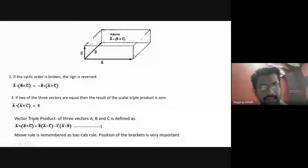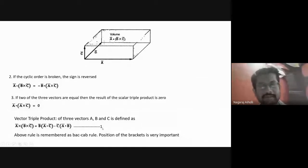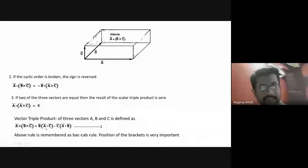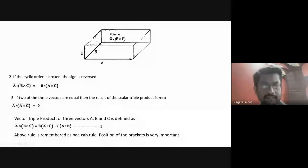Let us move on to the vector triple product. The vector triple product of three vectors a, b, and c is defined as: a bar cross of (b bar cross c bar) equals b bar times (a bar dot c bar) minus c bar times (a bar dot b bar) — let us call this equation one. This rule is called the BAC-CAB rule: b bar, a bar, c bar minus c bar, a bar, b bar. The position of the brackets is very important here.